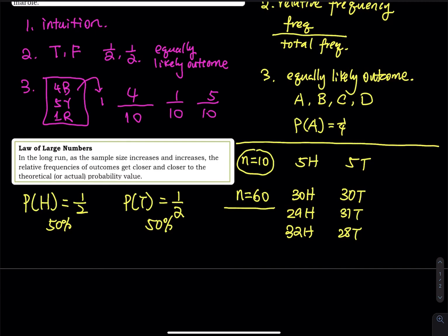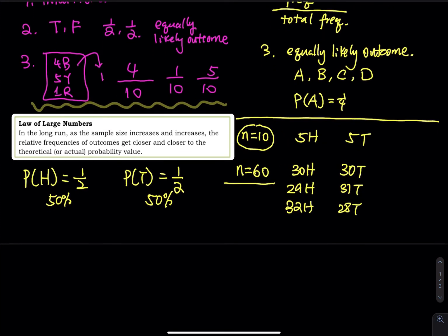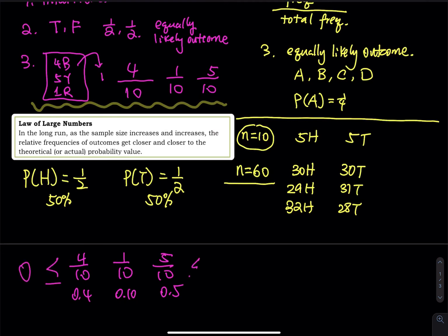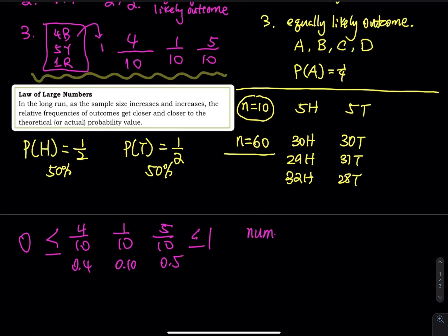Back to the marble problem — look at those three probabilities: 4 over 10, 1 over 10, and 5 over 10. That is 0.4, 0.1, and 0.5. You can see they are all between 0 and 1. So when you write a probability using fractions, the numerator is always less than or equal to the denominator.